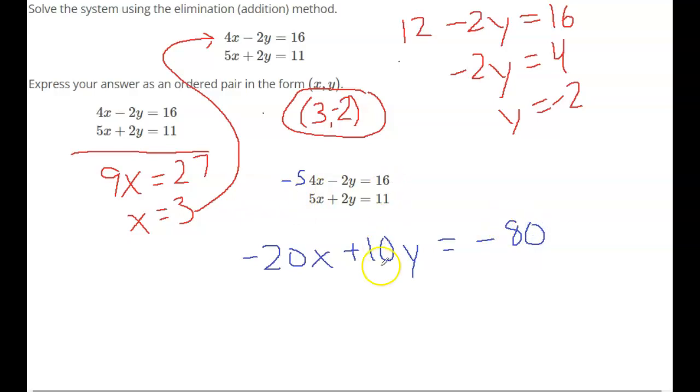16 times 5. All right. Now on the bottom, I need to multiply everything by a positive 4. That's going to give me 20x plus 8y equals 44.